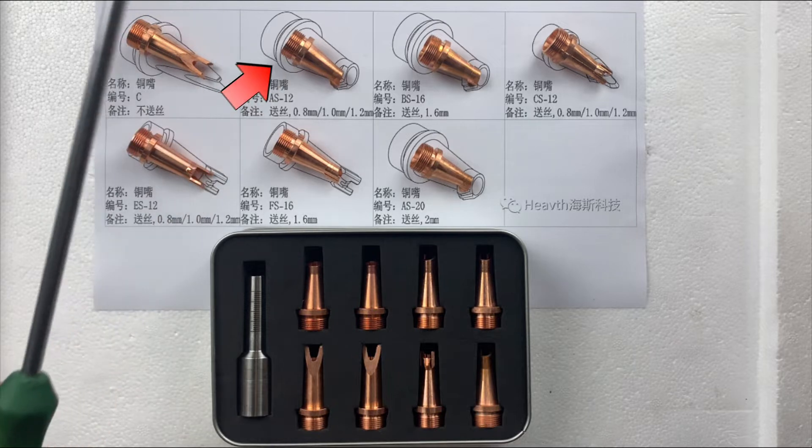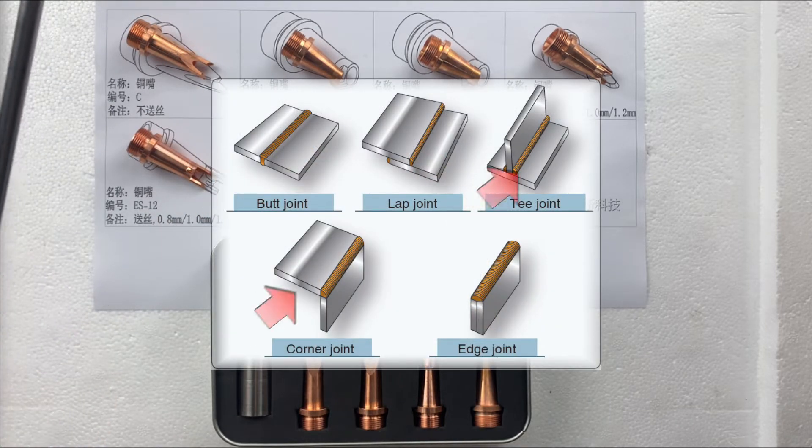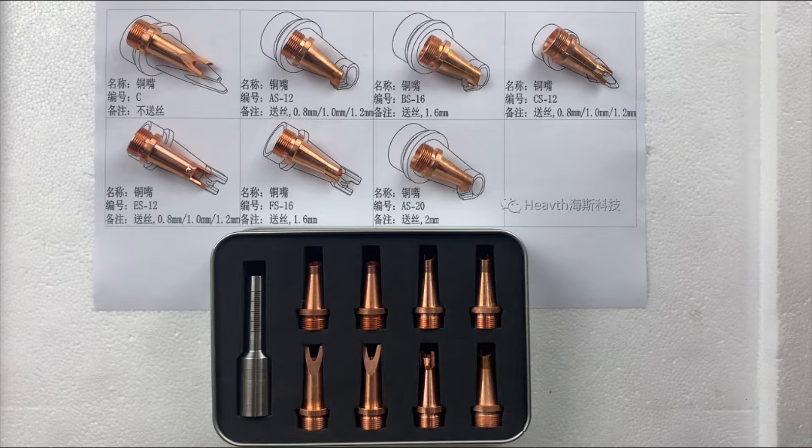Laser AS12 is for butt joint, corner joint, and lap joint. Well-fitting welding 0.8 to 1.2 mm.